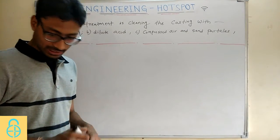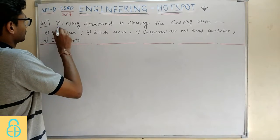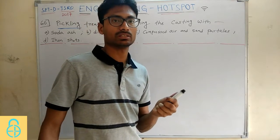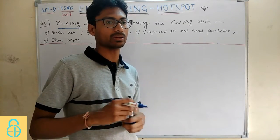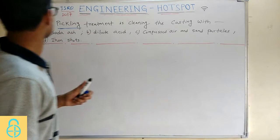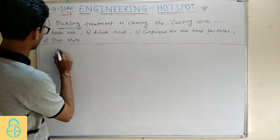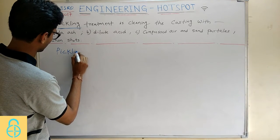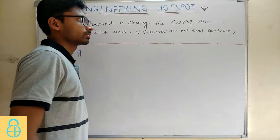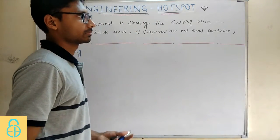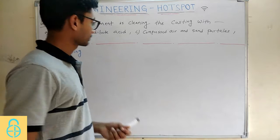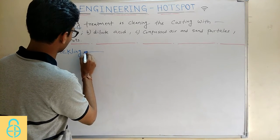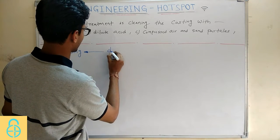So basically, the pickling — you might have heard this pickling process in chemistry also in 11th-12th. So basically, pickling is done by dilute acid, as we found it. Pickling is basically to remove some chemicals or something like that — some chemicals with the help of acid that has deposited on the surface. So pickling is done by dilute acid.